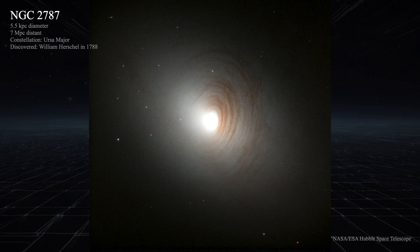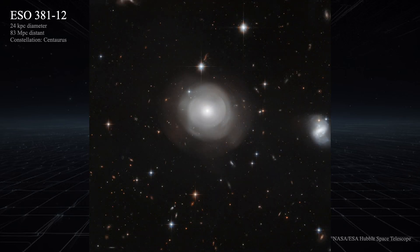Lenticular galaxies share a lot of composition similarities with elliptical galaxies. Both are predominantly comprised of older, redder stars, and all stars within both of these types of galaxies are believed to exceed about a billion years in age. Interestingly, globular clusters are also more abundant in lenticular galaxies than in comparable spiral galaxies — remember that the giant ellipticals always had huge numbers of them, which arose from the detritus of galactic mergers. Something similar may be going on with lenticulars.